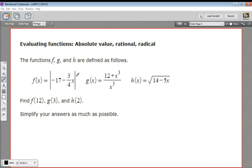In this problem, we're being asked to evaluate some functions. In this case, f of x is an absolute value function because it has these absolute value brackets here. G of x is a rational function because we've got a variable on the bottom of a fraction. And h of x is a radical function because we've got a radical sign here with the variable underneath the radical sign.